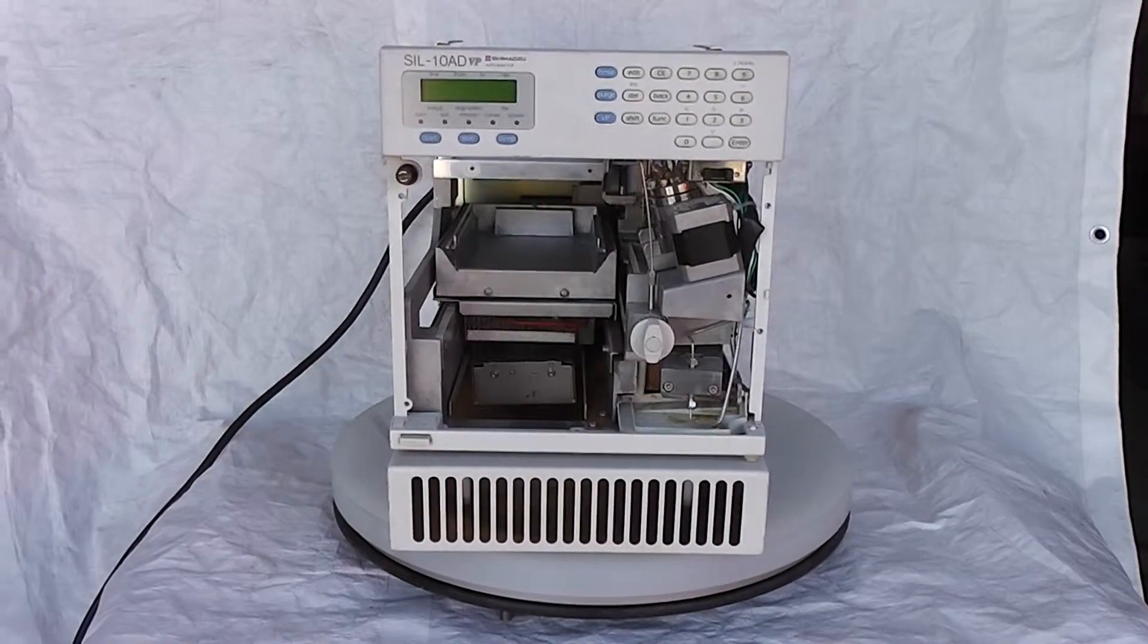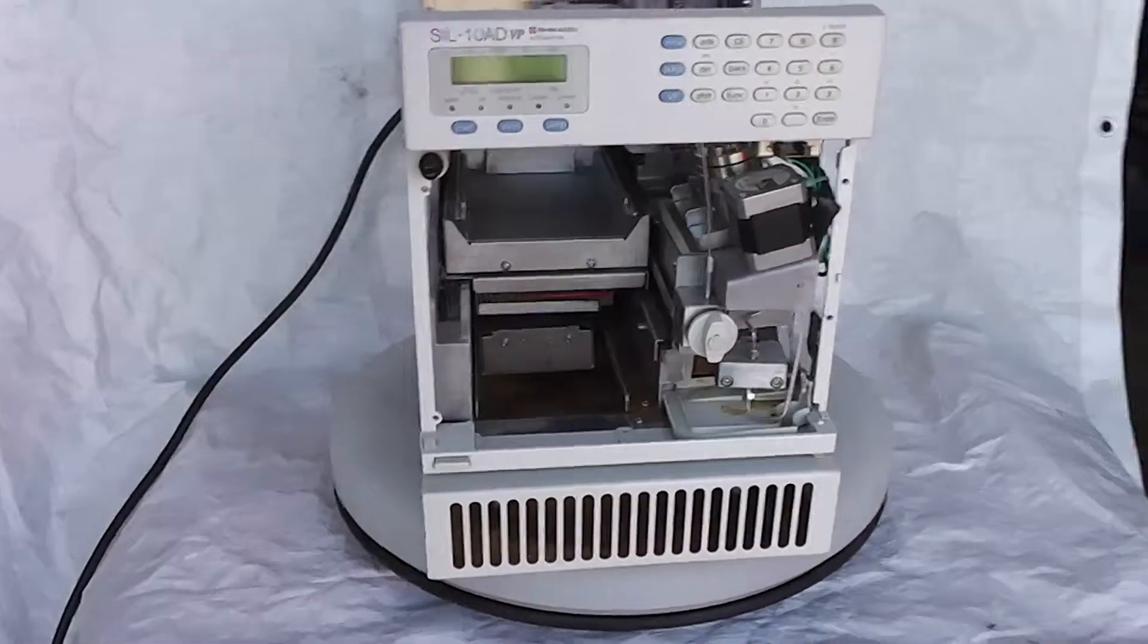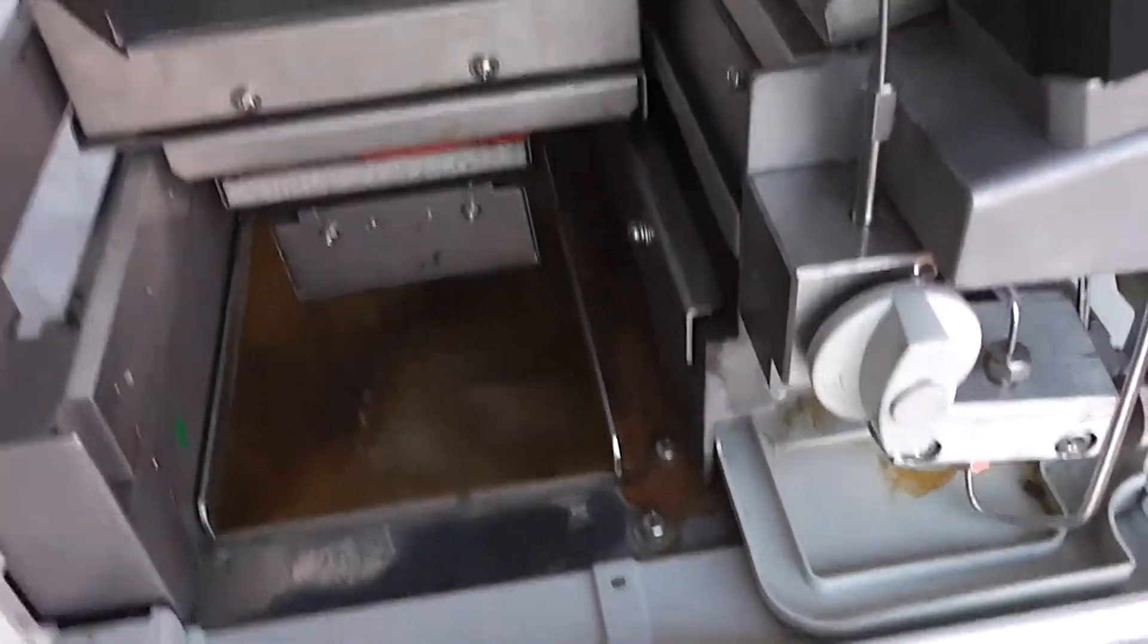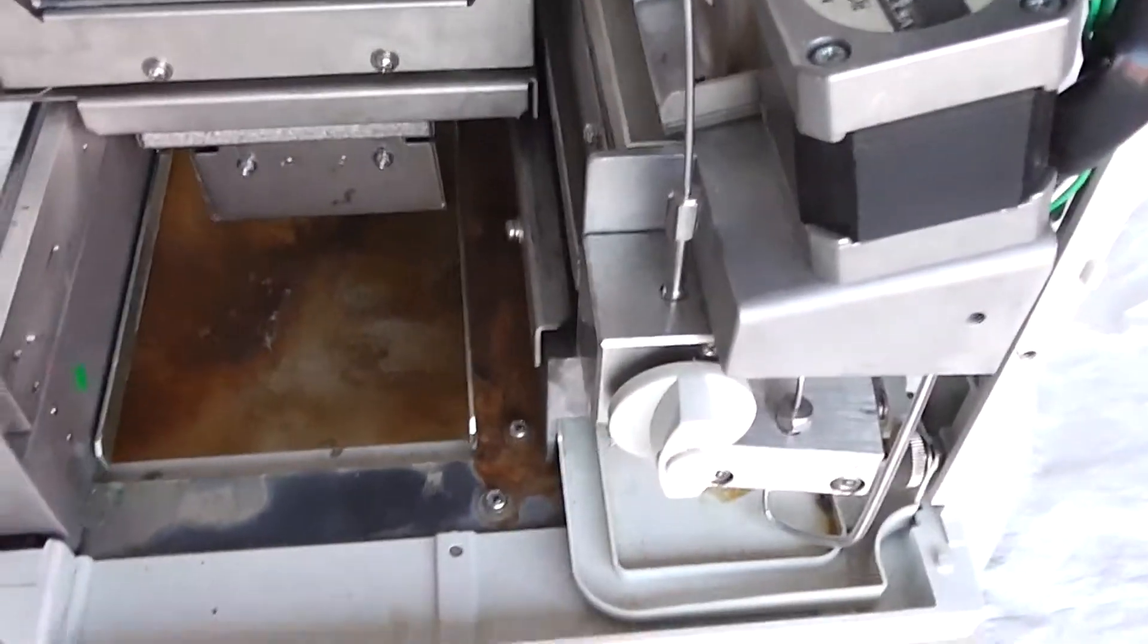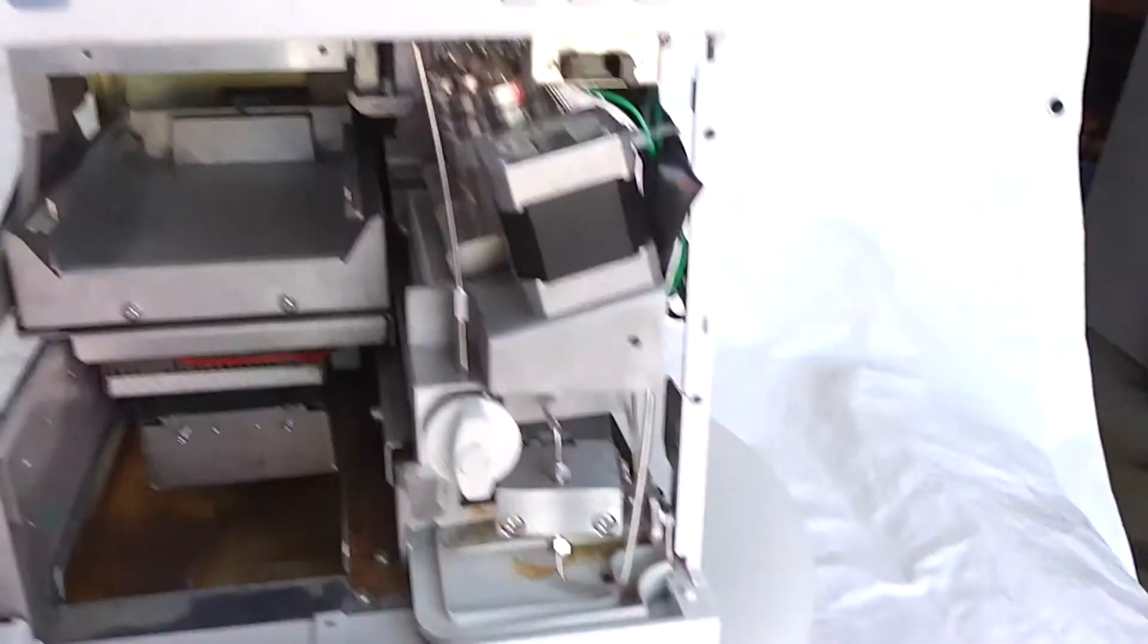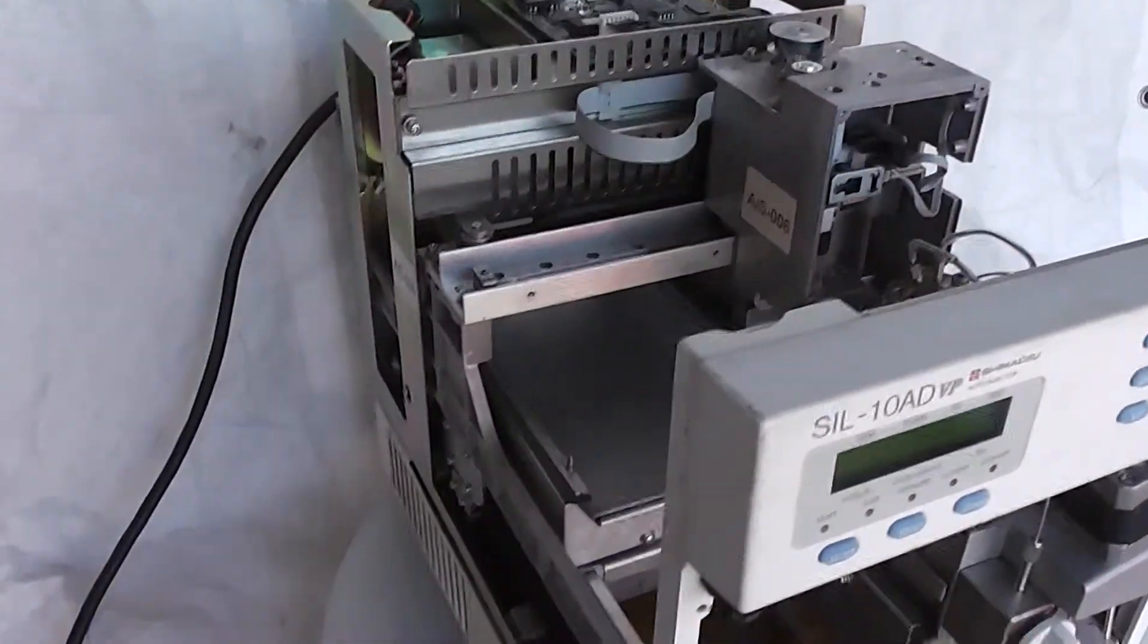I'm going to go through the cosmetics really quick. There's a lot of surface rust in that drip pan there. Obviously missing the case.